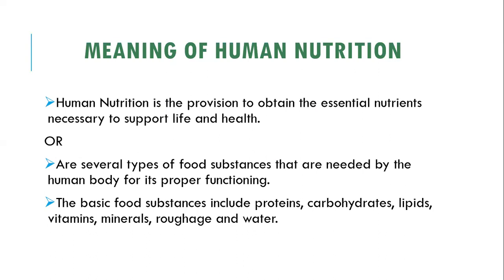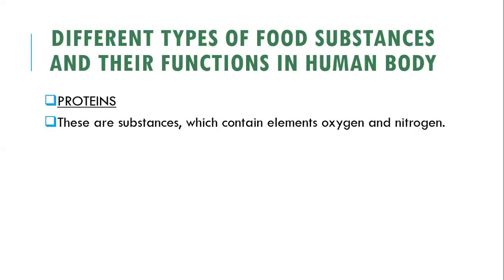The basic food substances include proteins, carbohydrates, lipids, vitamins, minerals, roughage, and water. We'll discuss each one of these in our next subtopic. Now let's see the different types of all these food substances and their functions in the human body.